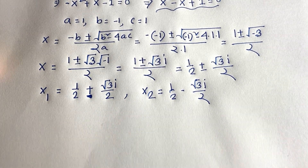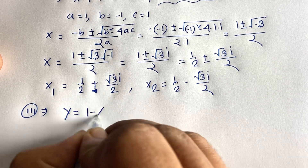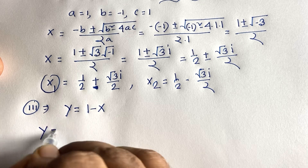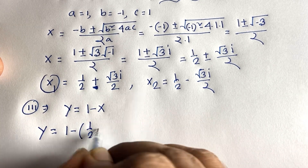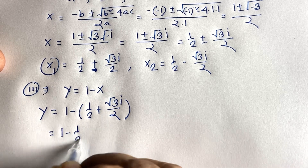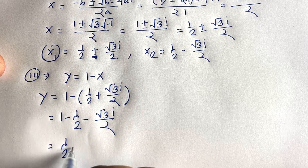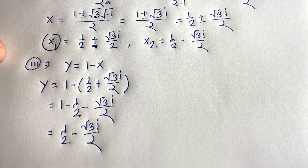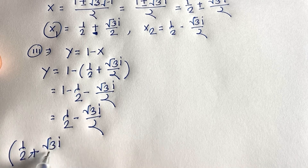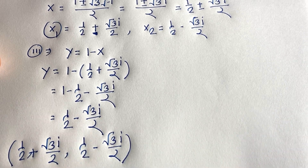Now we find the value of y. Recalling our third equation: y equals 1 minus x. When x equals x₁ equals 1/2 plus (√3/2)·i, we get y equals 1 minus (1/2 plus (√3/2)·i). This gives y equals 1/2 minus (√3/2)·i.